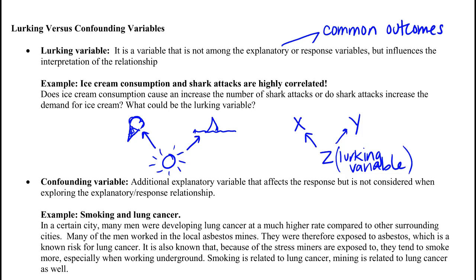This is different than a confounding variable. A confounding variable is also one that wasn't included when we actually did our experiment, but it's just an additional explanatory variable. It also affects the response, and if we don't properly account for it, we might attribute more to the variables we do have than should actually be attributed to them.